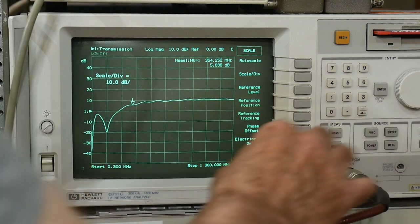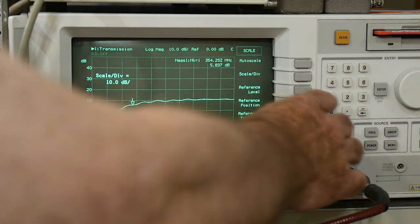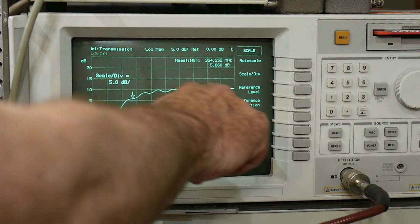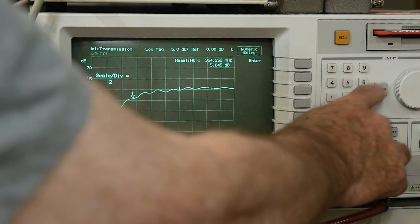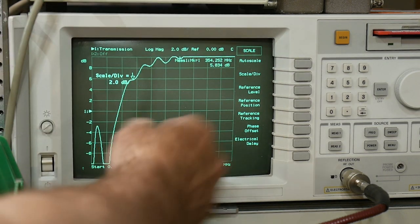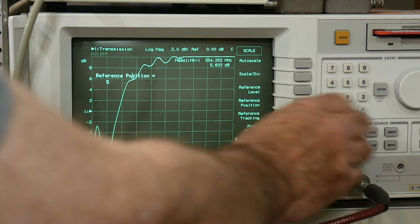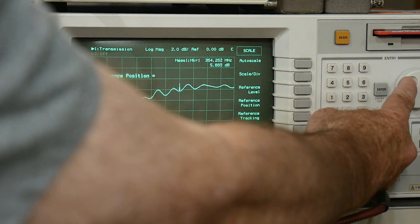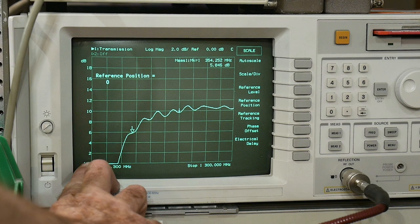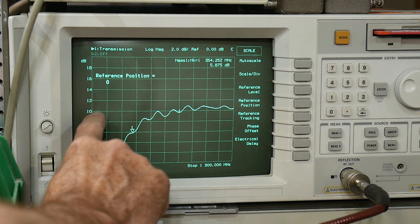So we're going to hit our scale factor, we want to have a good scale factor. Let's do a 5 dB per. And here you see it's coming up to about 10 dB. Let's go to 2 dB per division, and we've gone off scale. But we can lower the whole thing down by setting the reference position and dialing it down. So now 0 dB is here at the very bottom of the screen.